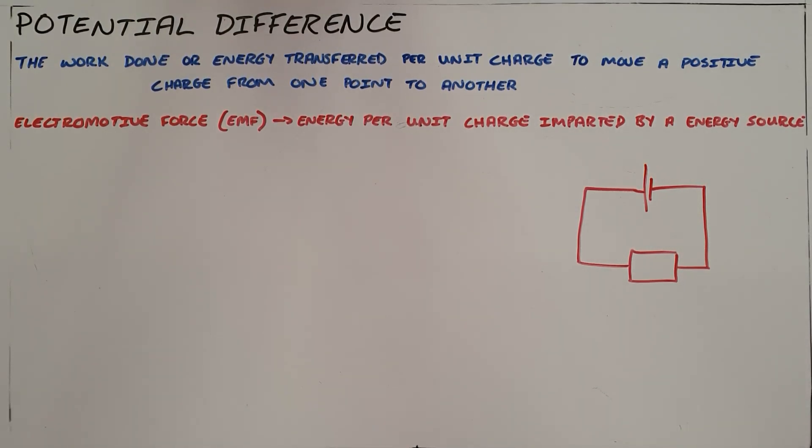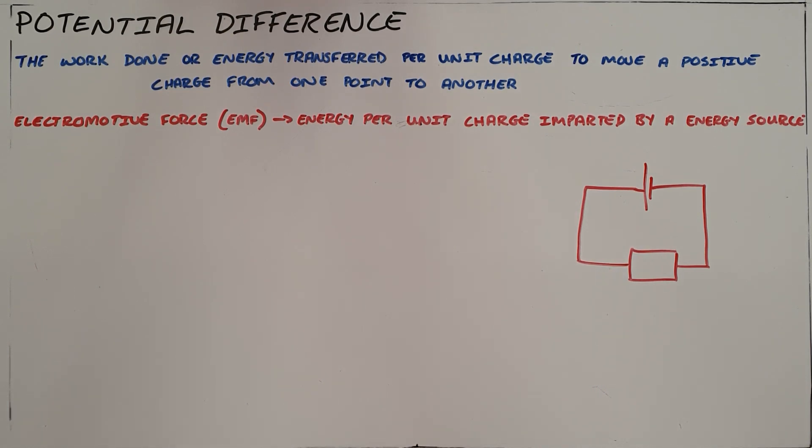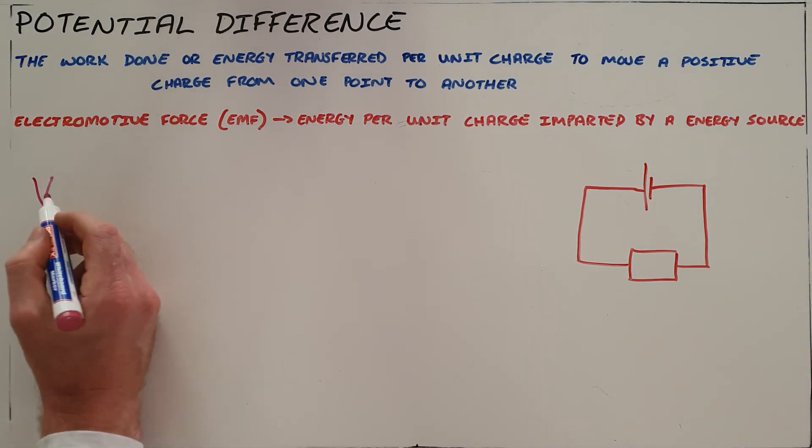Potential difference is the work done or energy transferred per unit charge to move a positive charge from one point to another, and that definition gives rise to the first formula for potential difference with the symbol V.